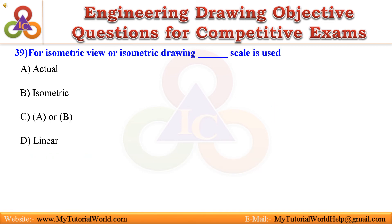Question 39. For isometric view or isometric drawing, underscore scale is used: A. Actual, B. Isometric, C. A or B, D. Linear. Answer is: Actual.